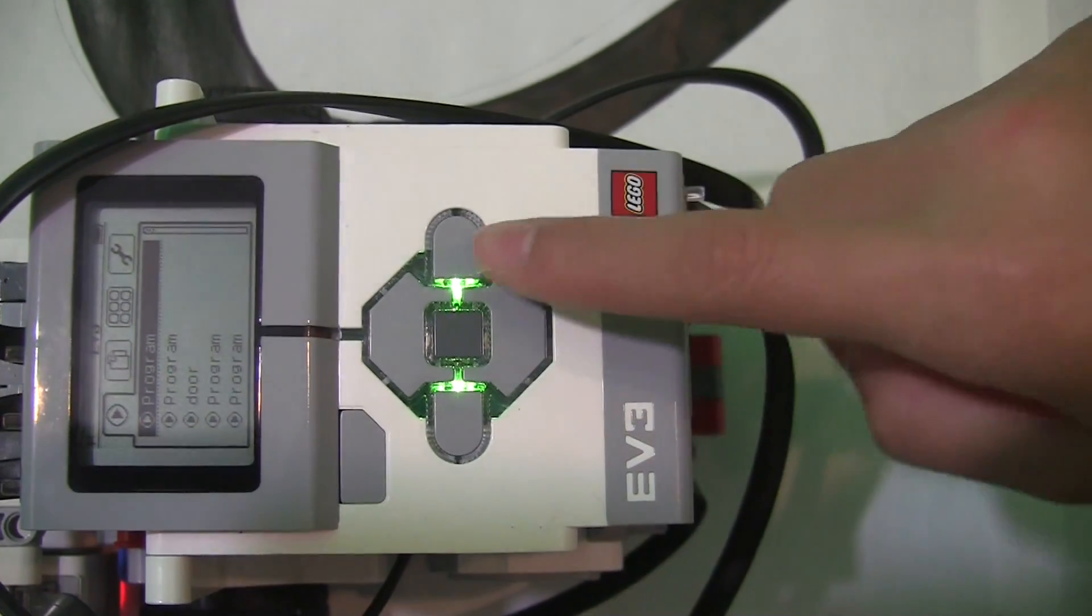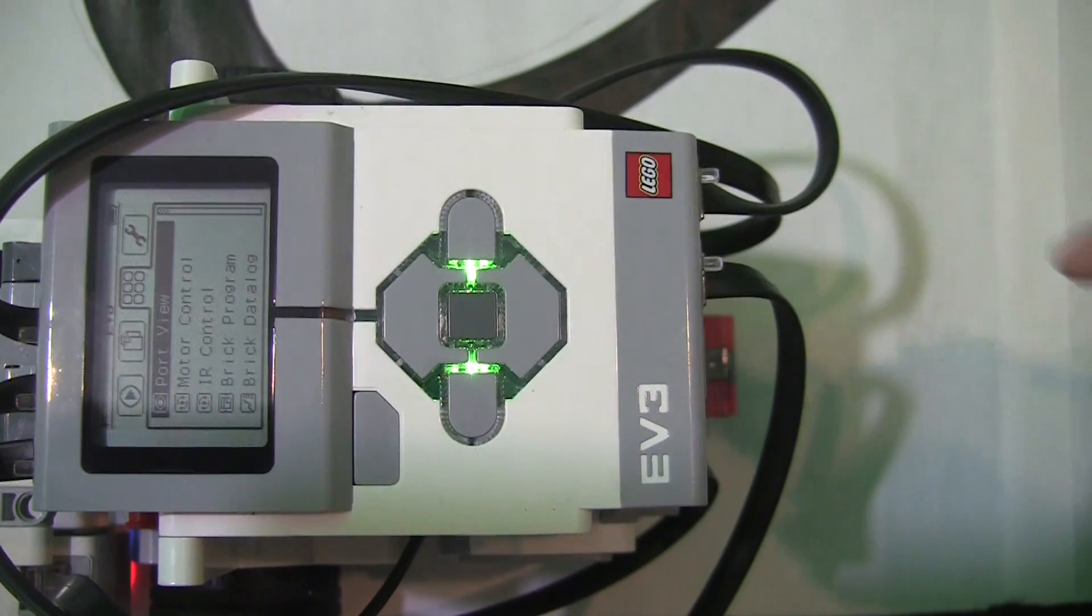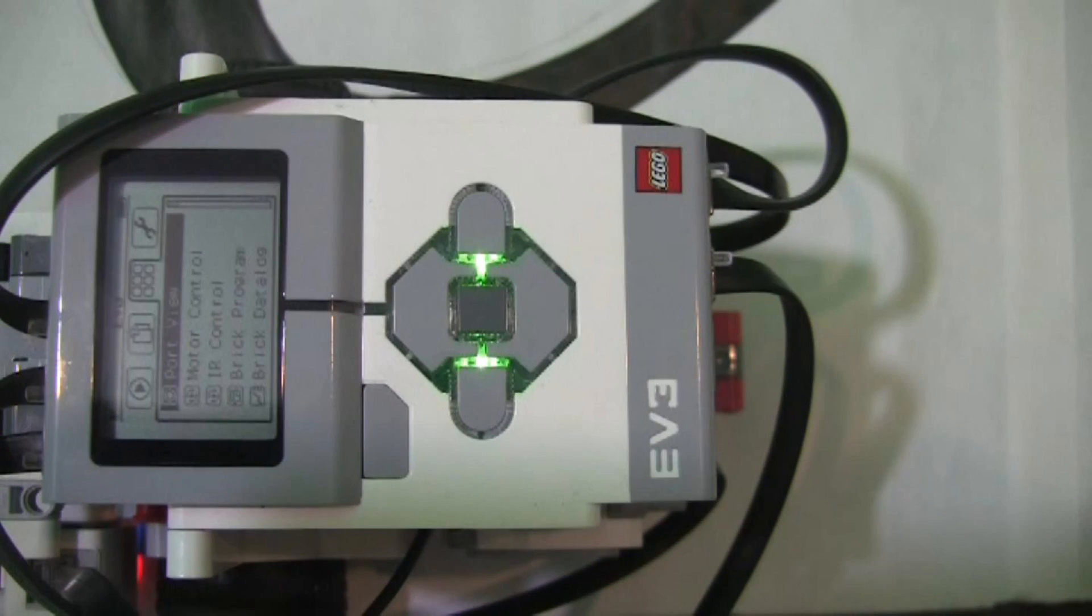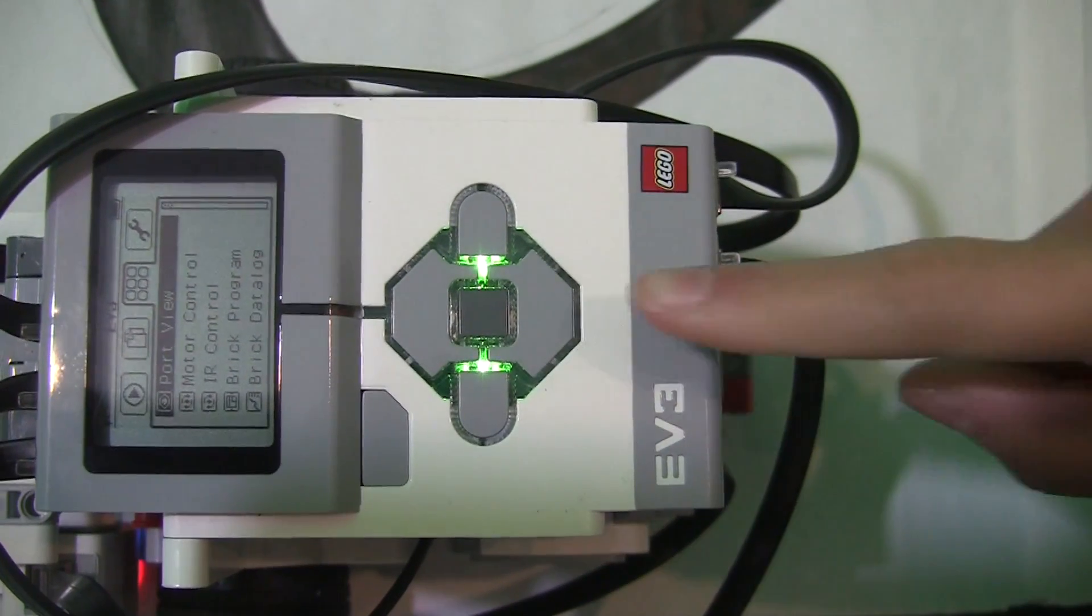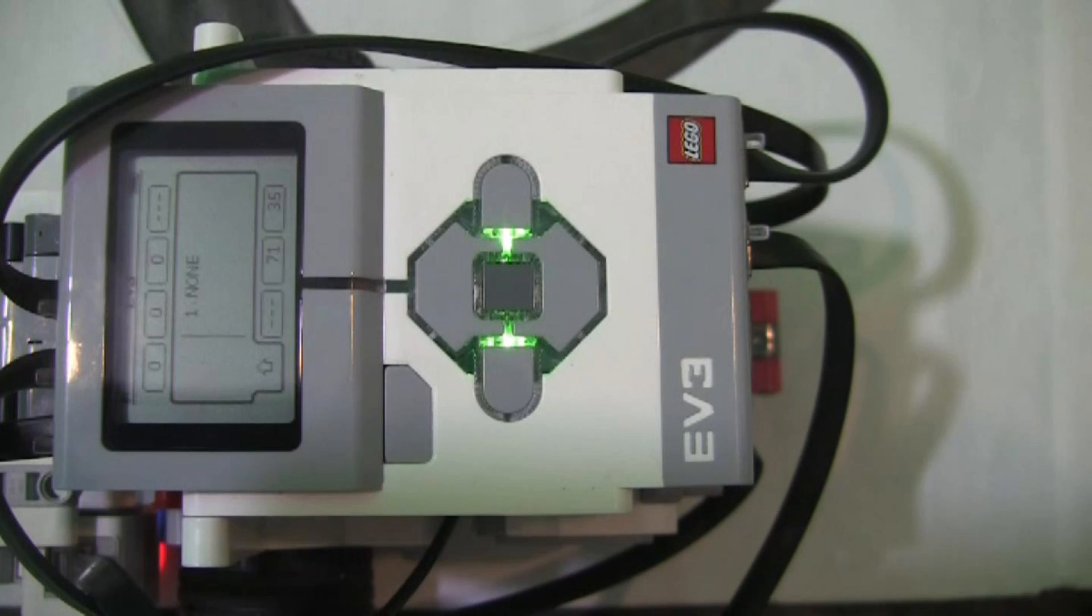Now, let's measure. Press the right brick button twice to go to the Brick App tab. You'll see the first app named Port View, and it's highlighted by default. Press the center button to enter the Port View. I don't have any sensor connected to Port 1 now, so you see it shows none.